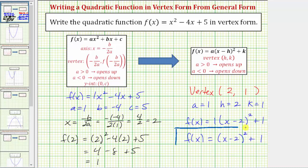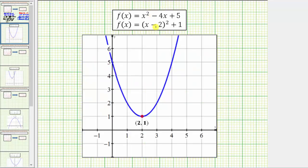Before we go though, let's verify our work graphically. If you were to graph both of these functions on the same coordinate plane, we get the same graph, and we can see from the graph the vertex is two comma one, verifying our work is correct.